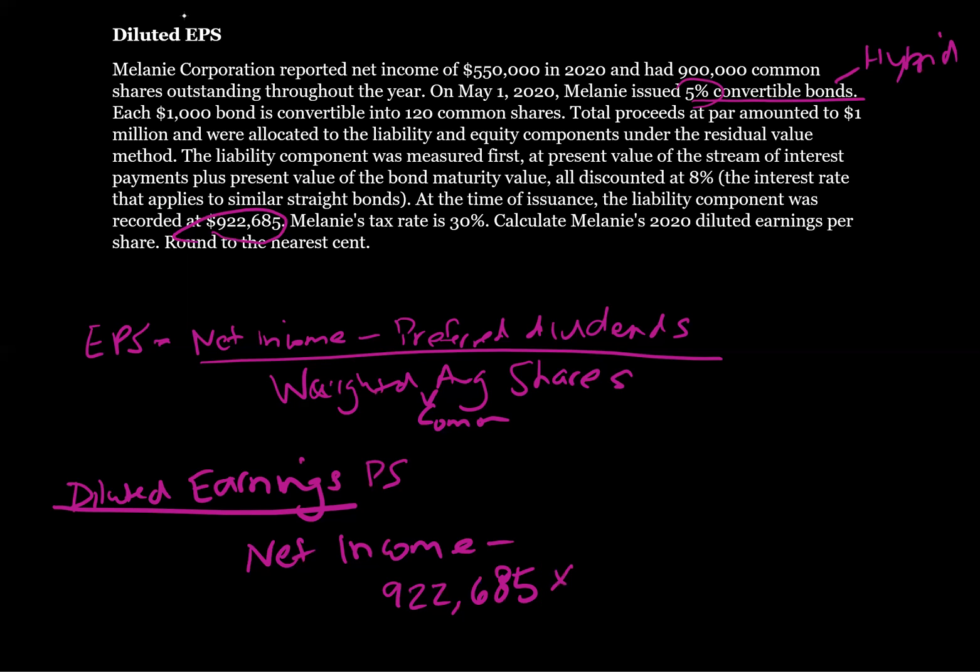If we look here, it says the present value is measured first, all discounted at 8%. So the interest rate that we're going to use just for the debt component is going to be 8%, the market rate. And this is going to give us $73,814.80. Now we're going to multiply it by how many months are outstanding. This was on May 1st, so 8 out of 12 months, which is going to give us $49,209.37.